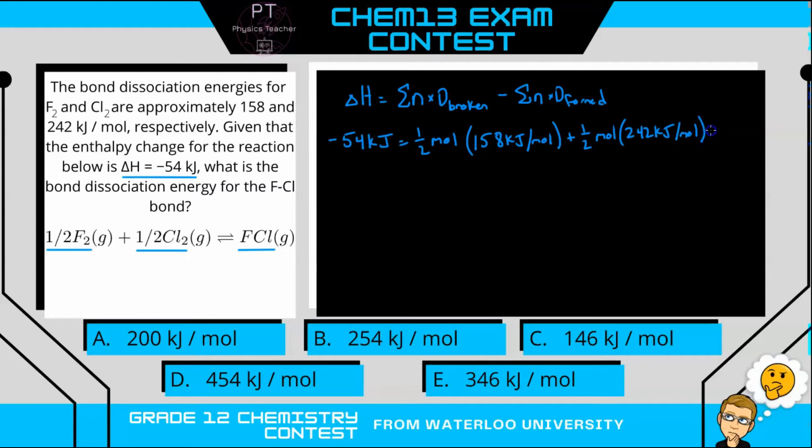And then we're subtracting for FCl, so we have one mole multiplied by D for its bond dissociation energy. That is what we're going to solve for.